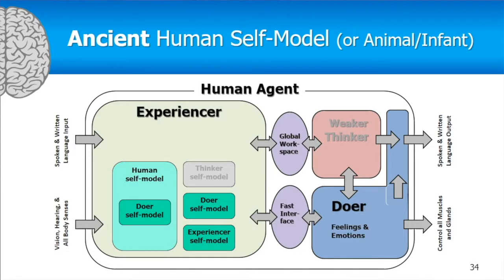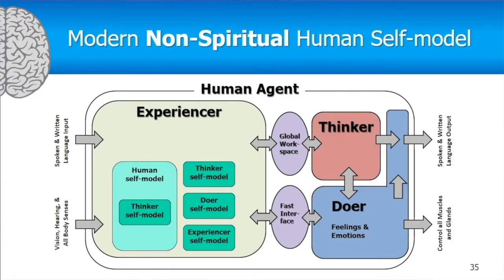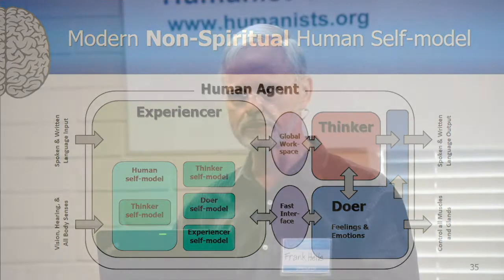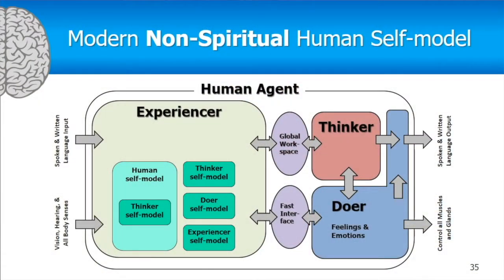The ancient human self-model would be equal to the doer's self-model — essentially what animals have, where the self-model is just one's own body. A normal modern non-spiritual human has the human self-model equal to the thinker's self-model. The thinker's inner voice continually bombards the experiencer with statements like 'I am,' 'I mean I,' and 'I am in complete control of the body.' The experiencer eventually believes this and updates the overall self-model to equal the thinker's: 'I am that little voice in my head.'